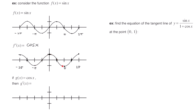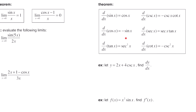Now looking at the graph of cosine and its derivative: the slope of the tangent line at 0 is 0. At the next point the slope is negative 1, so we go to negative 1. Then slope is 0, then positive 1, and back to 0. Looking at this graph, you'll notice it's the sine curve reflected across the x-axis, so the derivative of cosine is negative sine.